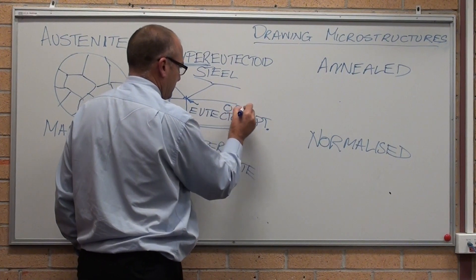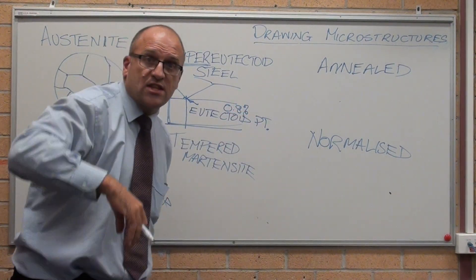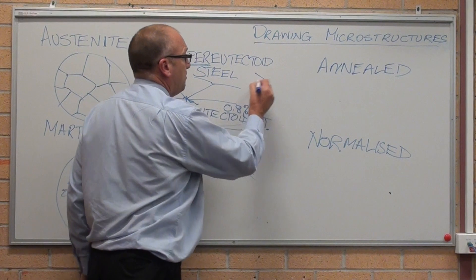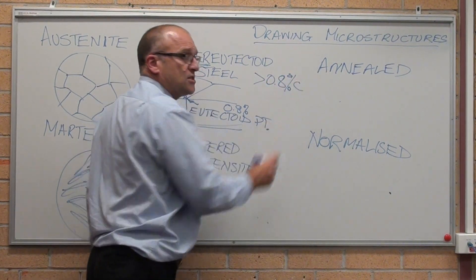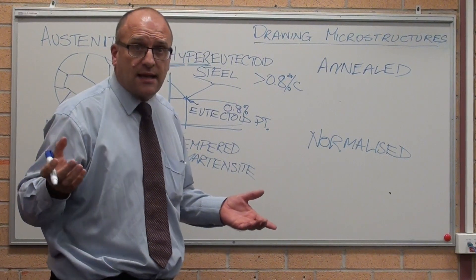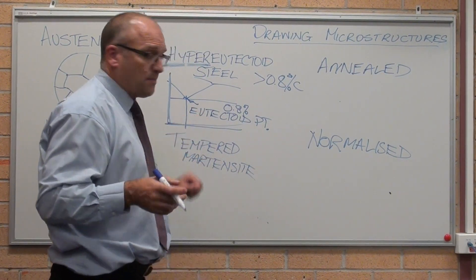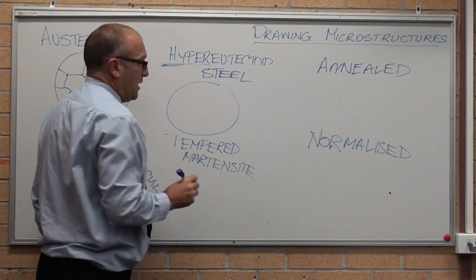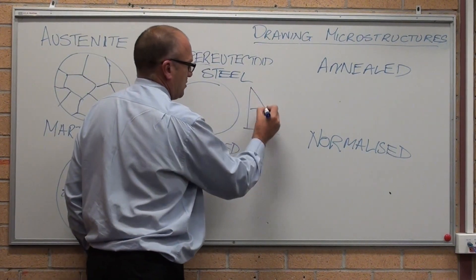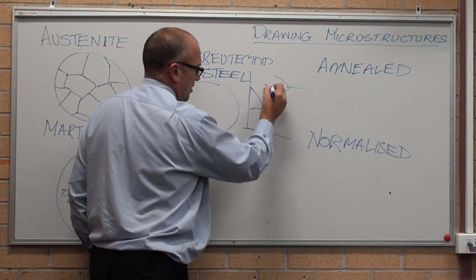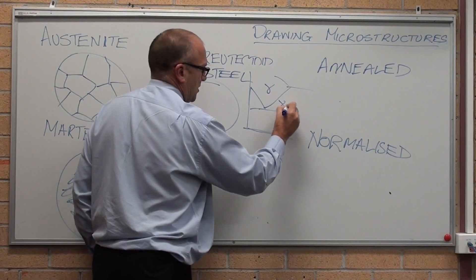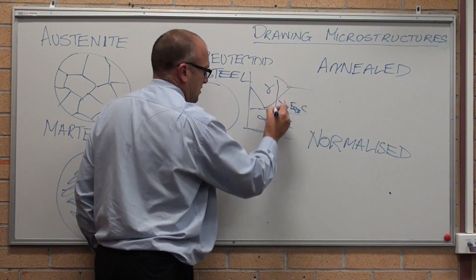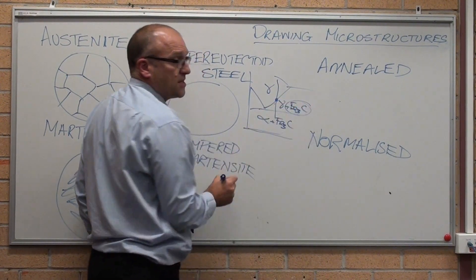It's 0.8%. Hyper rhymes with super, means above. A hypereutectoid steel is greater than 0.8% carbon. So a 0.9% carbon, a 1% carbon steel that's cooled slowly has a particular structure. As it cools, let's have a look at this chart again. As it cools,